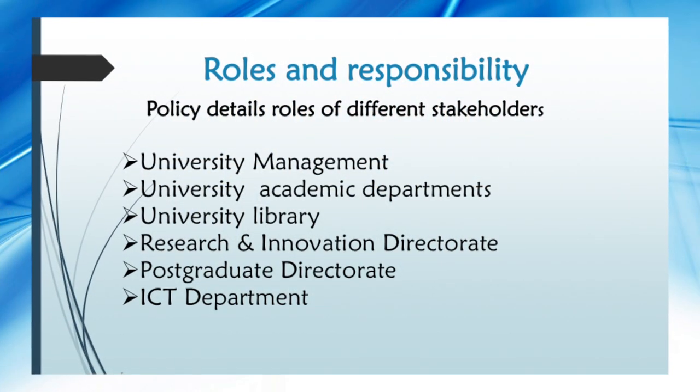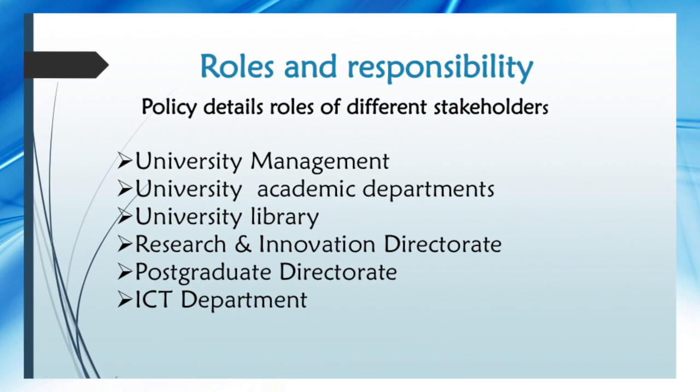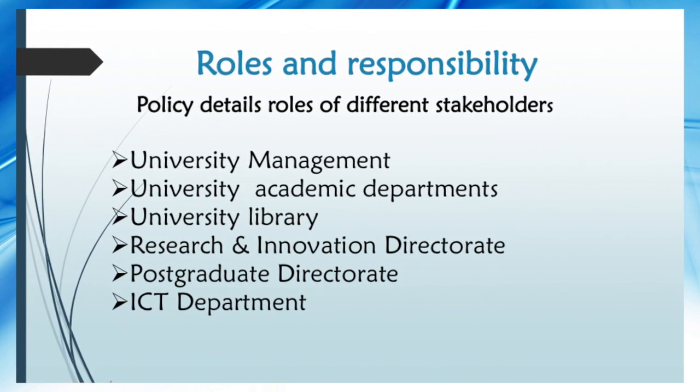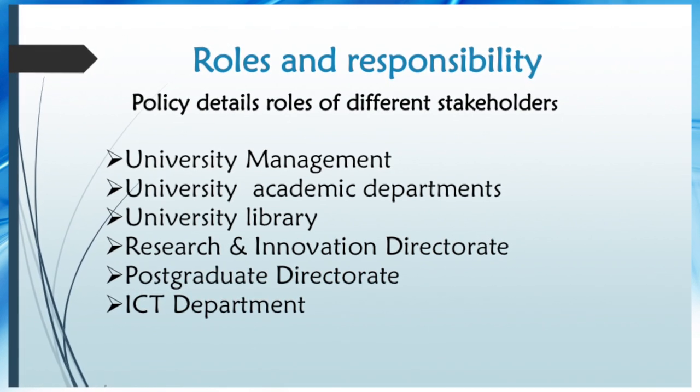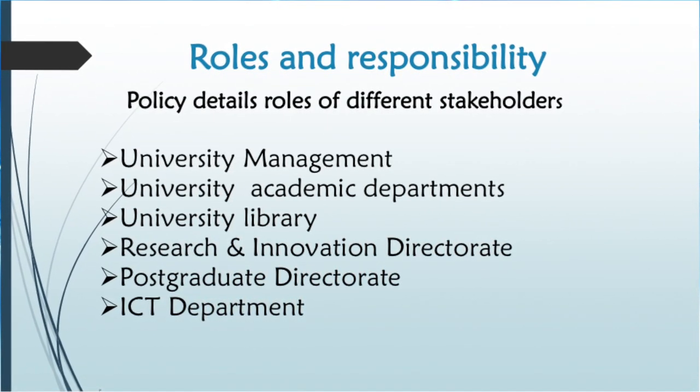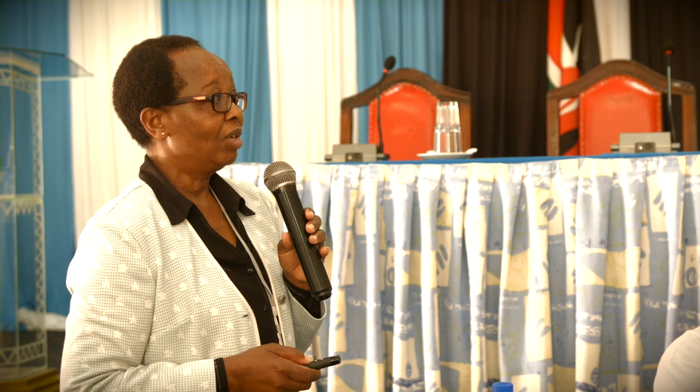Regarding roles and responsibilities, our policy is clear on what the university management is supposed to do. The key areas include the university academic departments, the university library, the research and innovation directorate, the postgraduate directorate, and the ICT department. These are the key areas we collaborate with so that the repository is able to deliver — so that content is collected, submitted, and made accessible.